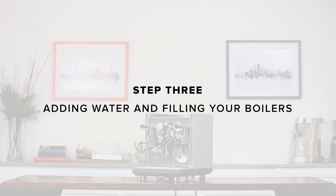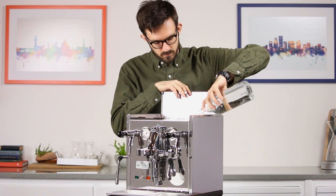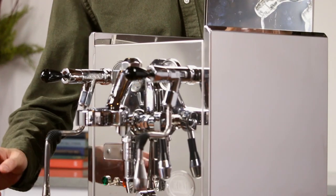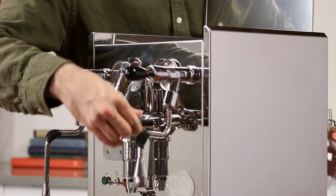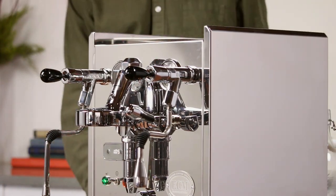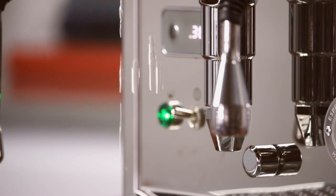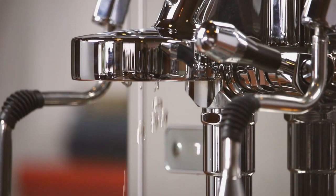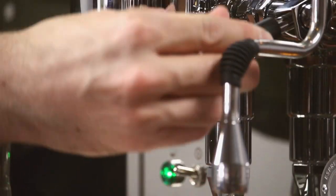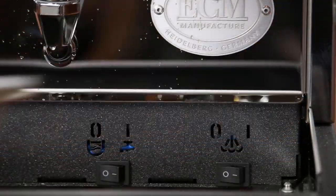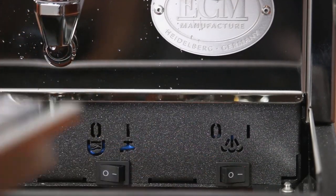Step 3. Adding water and filling your boilers. For reservoir use, fill the reservoir with filtered and adequately soft water. Lift the brew lever and turn the machine on. With the brew lever activated, the pump will turn on and water will start to fill the steam and brew boilers. After a short period, you'll start to see water coming through the group head. Lower the brew lever once 4 ounces of water have been dispensed from the machine. Remove the drip tray and turn the steam boiler switch to the on position.